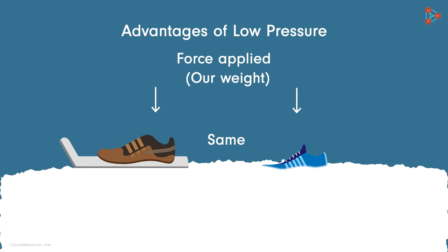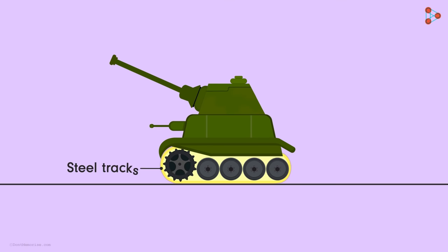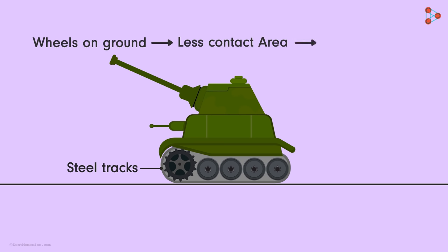Have you ever wondered why the wheels of an army tank run on the steel tracks rather than on the ground? Notice that the wheels are on steel tracks and are not touching the ground. The army tank is huge in size. If the wheels run on ground, due to less contact area with the ground, the pressure on the ground will be massive.